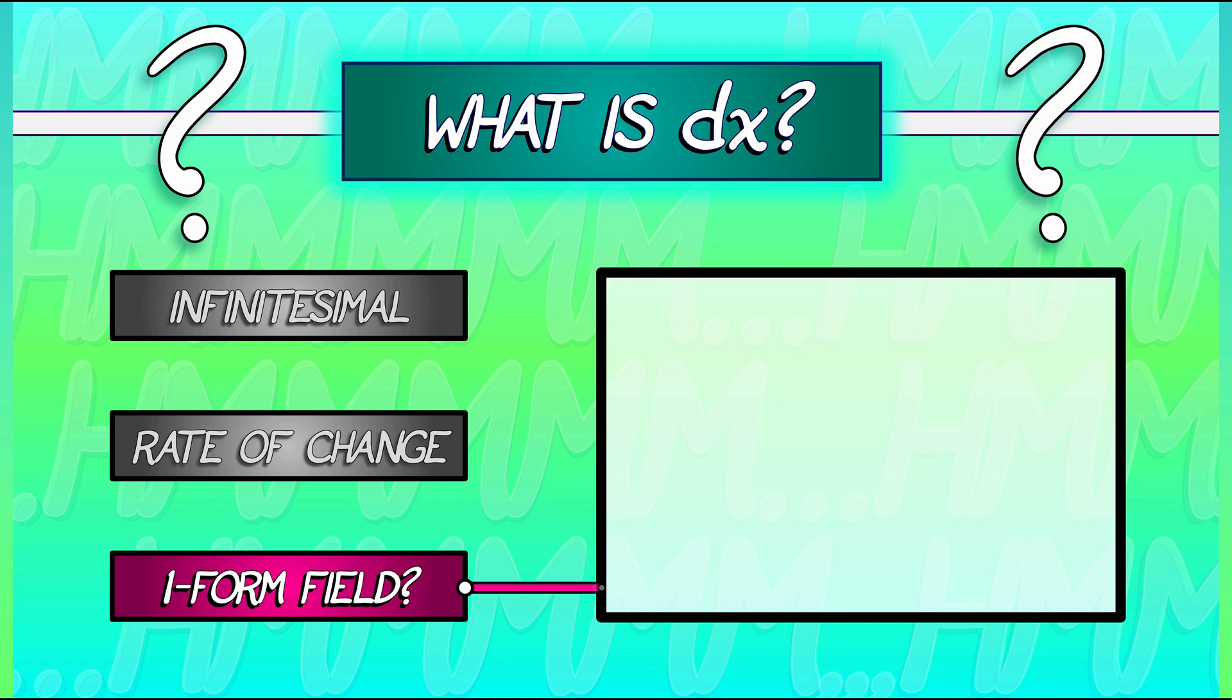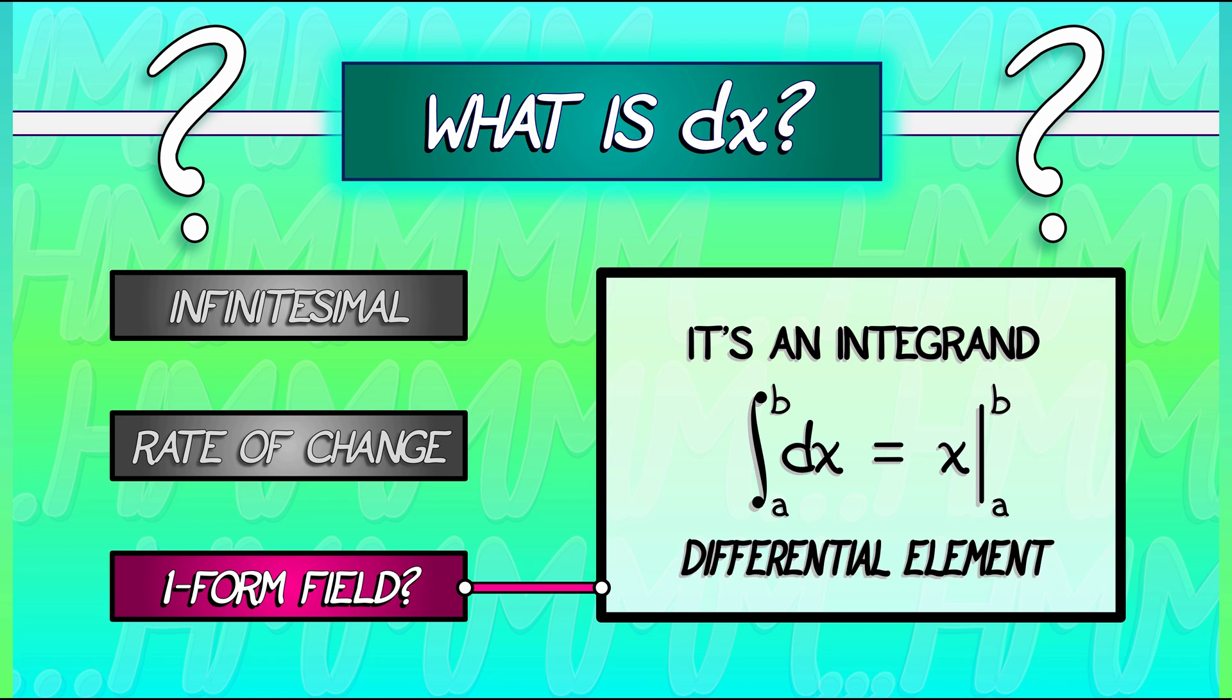DX is an integrand. It's something that wants to be integrated from A to B. If we integrate DX from A to B, then what we're really doing is taking the antiderivative X and then evaluating that from A to B. Later on in this course, we're going to think about this action. We're going to think about these types of things that want to be integrated as differential elements. And it's going to be a very important part of our story.